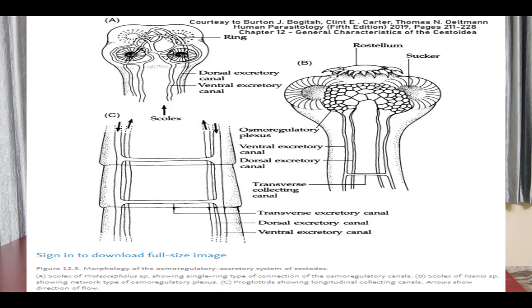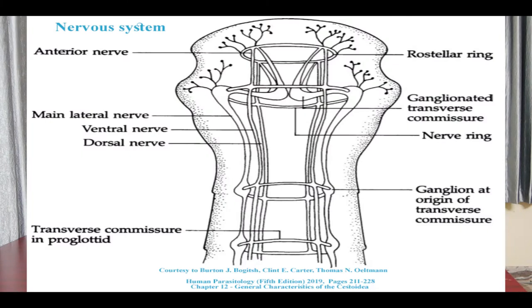The ventral canals meet and open at the tip of the last proglottid as a median excretory pore. The nervous system consists of an anterior nerve mass in the scolex and two lateral longitudinal nerve cords. Cross fertilization occurs where there is more than one worm in the host gut, but self-fertilization may occur between proglottids of one worm or even within one proglottid.